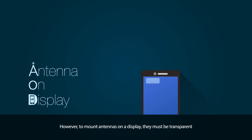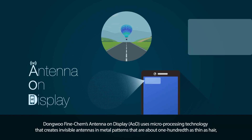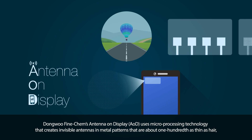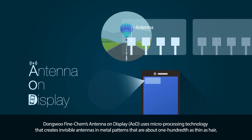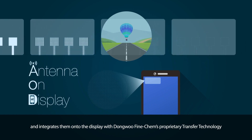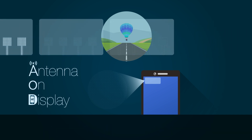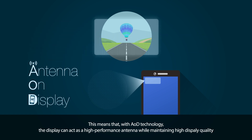However, to mount antennas on a display, they must be transparent. Tomu Finechem's Antenna on Display uses microprocessing technology that creates invisible antennas in metal patterns that are about one-hundredths as thin as hair, and integrates them onto the display with Tomu Finechem's proprietary transfer technology. This means that with AOD technology, the display can act as a high-performance antenna while maintaining high display quality.